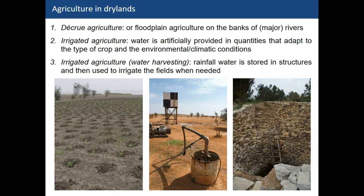When we think about drylands and agriculture, we normally associate that with an extra source of water rather than just rain. We normally think of creel agriculture or floodplain agriculture — that's cultivation done on the banks of major or minor water courses. Think about the Nile, for example, where people exploit the rich, fertile organic soil along the boundaries of the river to cultivate. Other types include irrigated agriculture through exploiting water tables, wells, or water harvesting methods like cisterns or low stone walls that help contain rainwater.